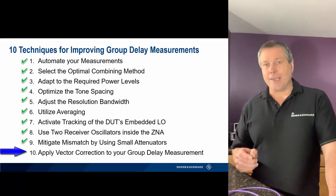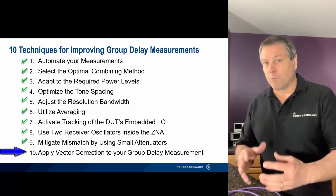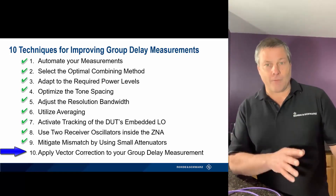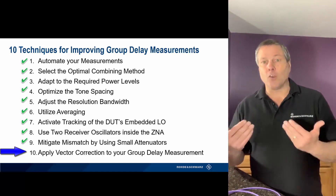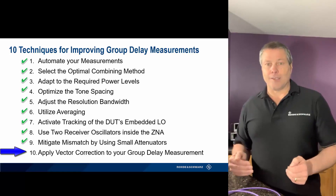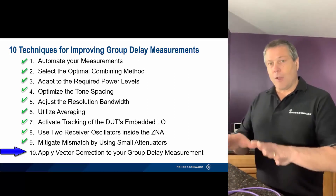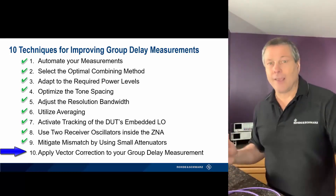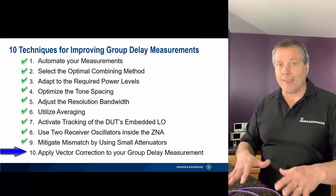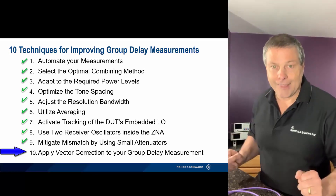This is the ability to add S-parameter error correction to our two-tone group delay technique. Not only are we now able to measure group delay on devices with embedded LOs, but we also get vector-corrected return loss to handle the mismatch that occurs between the device under test and the network analyzer. We now have real error models applied to the measurement channel in addition to everything else done in the previous nine videos — this is what's going to make our measurement finally the most accurate it can possibly be.